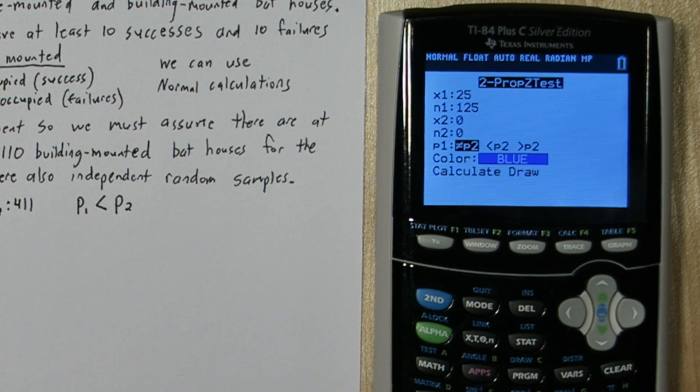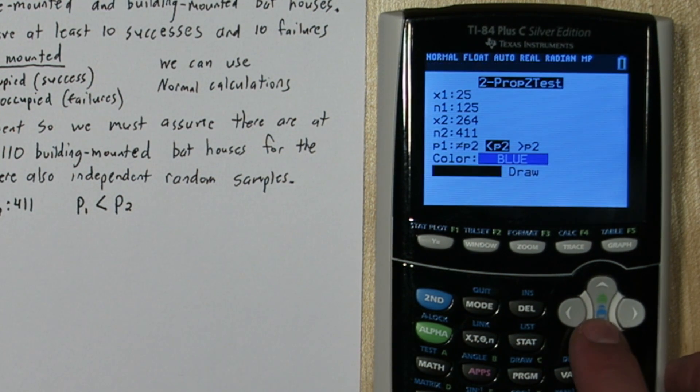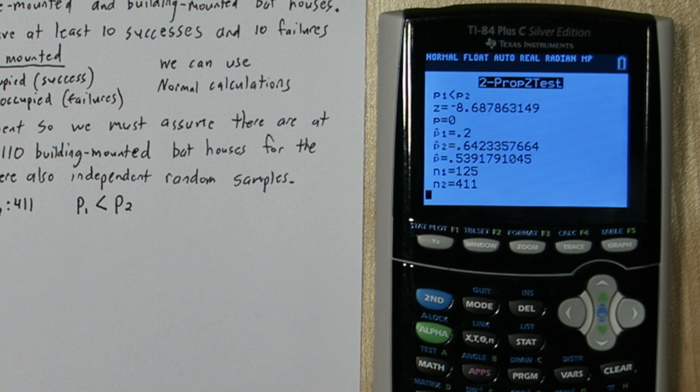X2 and N2 are the same, but for the building-mounted. So 264 occupied building-mounted bat houses, out of a total of 411. Now since we're interested in if the proportion of tree-mounted bat houses that's occupied is less than the true proportion of building-mounted bat houses, we're going to choose the less than sign. And if you go down to calculate, here's our results.